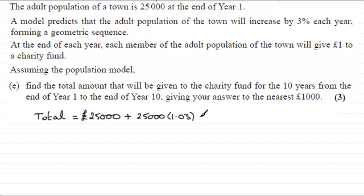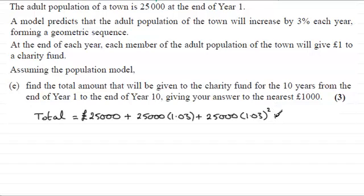For the next year it would be 25,000 multiplied by 1.03 squared. And it's going to go on like this all the way up to year 10, which is going to be 25,000 multiplied by 1.03 to the power 9. Remember the 10th term would be a × r to the power n minus 1.